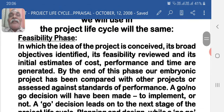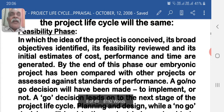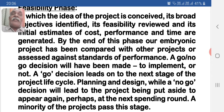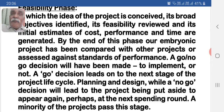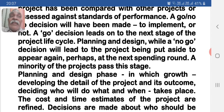The feasibility phase is one in which the idea of the project is conceived, its broad objectives identified, its viability reviewed, and its initial estimates of cost, performance, and time are generated. By the end of this phase, our embryonic project will have been compared with other projects or assessed against standards of performance. A go/no-go decision will have been made to implement or not. A go decision leads to the next stage of the project life cycle — planning and design — while a no-go decision leads to the project being put aside, perhaps to appear again at the next spending round.